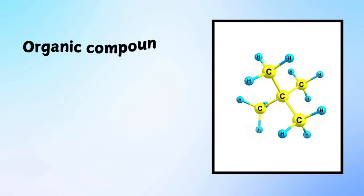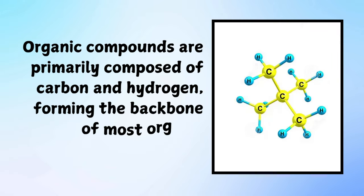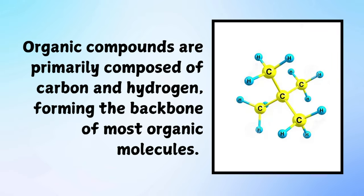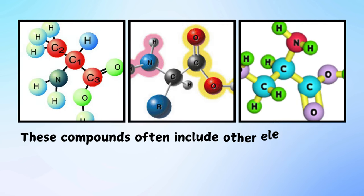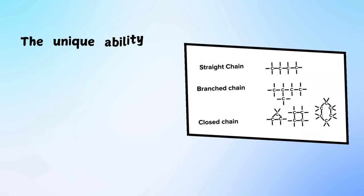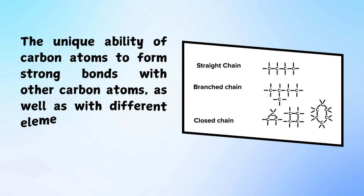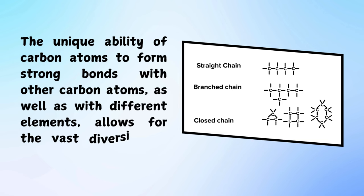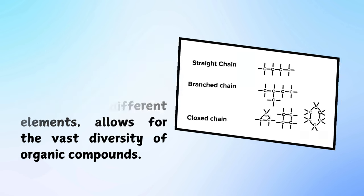Introduction to organic compounds: organic compounds are primarily composed of carbon and hydrogen, forming the backbone of most organic molecules. These compounds often include other elements like oxygen, nitrogen, sulfur, and halogens, such as chlorine. The unique ability of carbon atoms to form strong bonds with other carbon atoms, as well as with different elements, allows for the vast diversity of organic compounds.